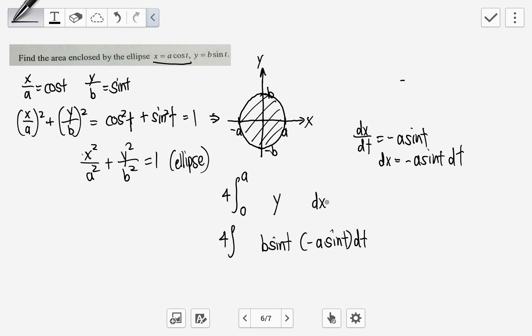But what about my upper and lower limits? When my x is equal to 0, then my cosine t is equals to 0. So that means when is cosine t equals to 0? Cosine t is equals to 0 when my t is pi over 2. And when is my x equals to a? When my x is equals to a, then a over a equals to cosine t. So my cosine t equals to 1, and that means t equals to 0.